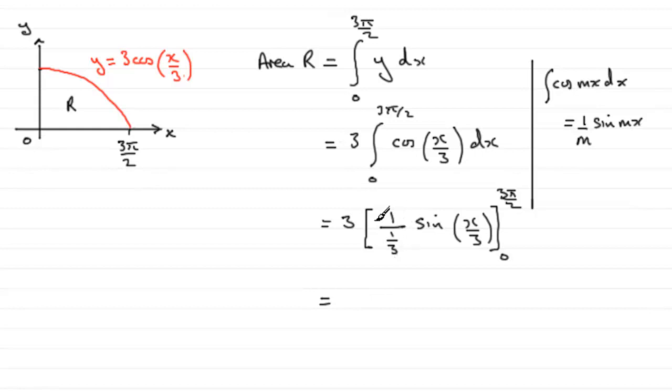So if we clean this up, we've got 1 divided by 1/3, well that's going to be 3. 3 times 3 is 9. And then all I need to do is substitute our values in, our limits in. Starting with 3π/2, we've got the sine of 3π/2 divided by 3.